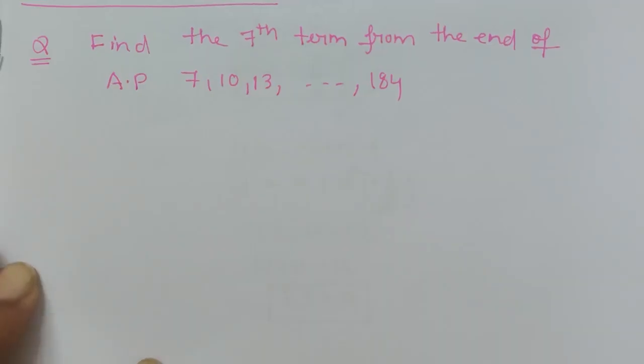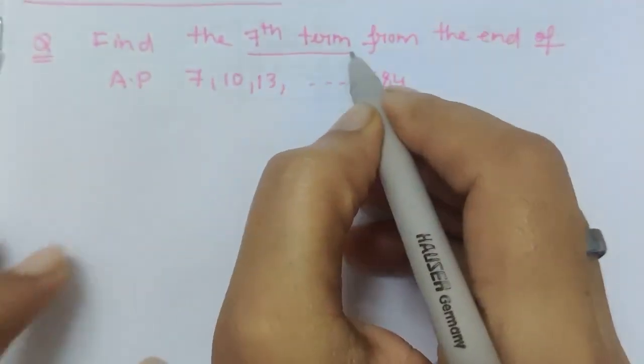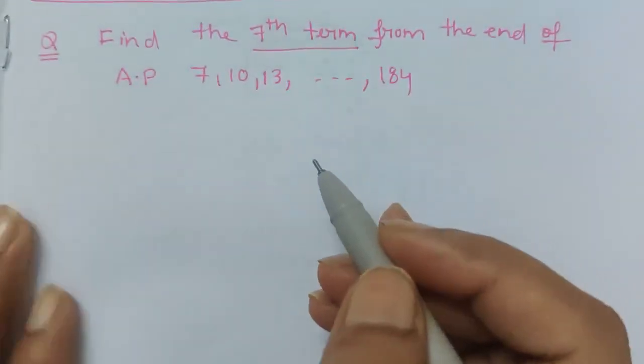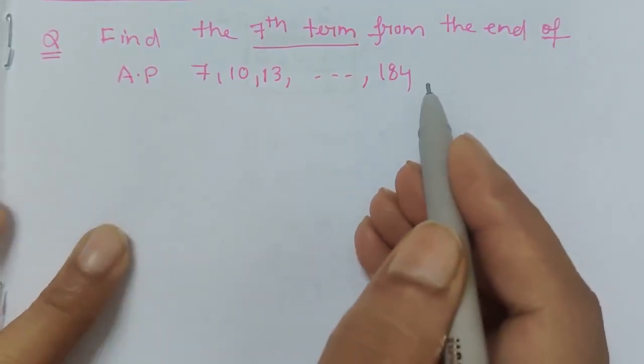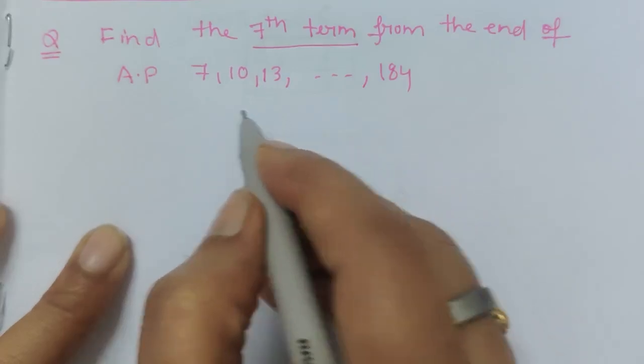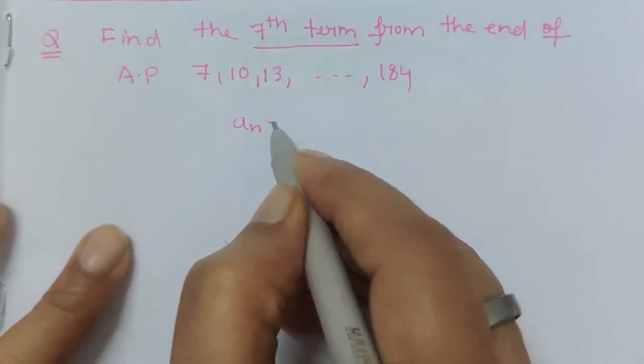Good morning friends. In this question we have to find the seventh term from the end of the AP 7, 10, 13, up to 184. From the end, so here the formula which we will use is aₙ is equal to l plus n minus 1 into d.